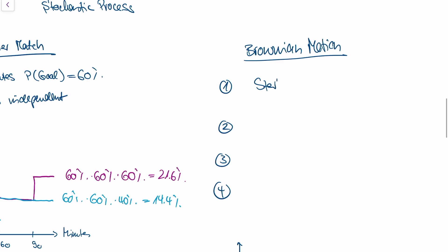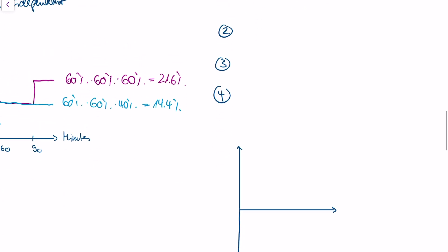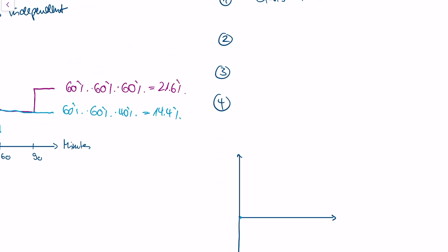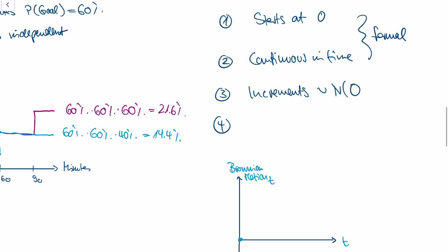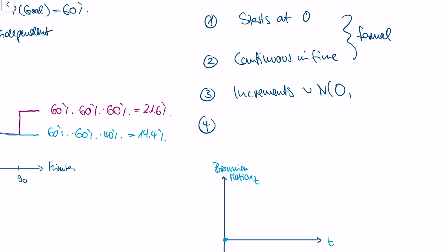First, it starts at zero. At time zero, our Brownian motion starts at zero. This is time, this is Brownian motion at that time. Second property is that it's a continuous function in time. Those two are rather formal. Now comes an important assumption: increments are normally distributed.